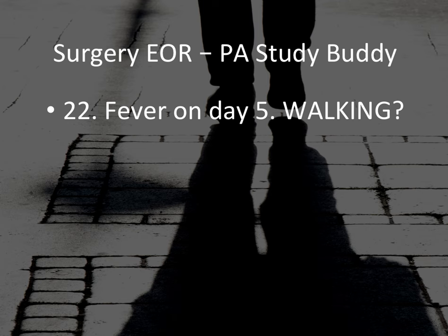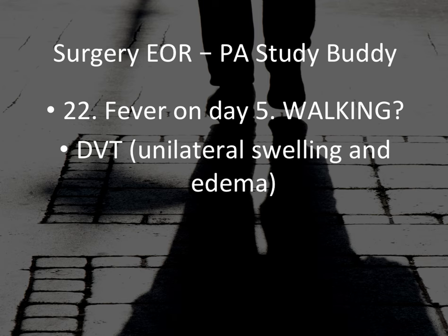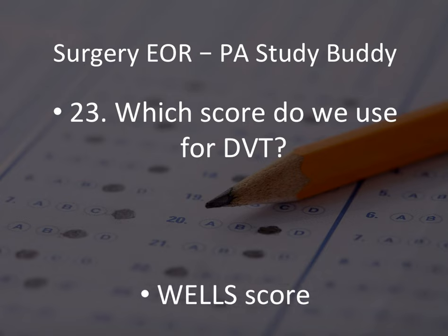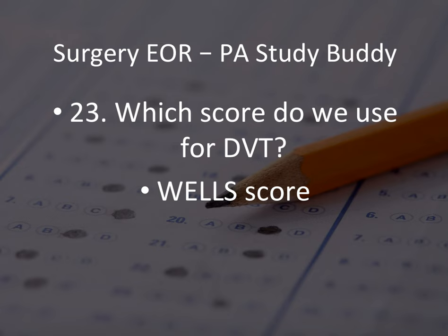Fever on post-op day five — walking — this will be DVT. Remember: days one to three is wind/pneumonia; on day five it will be DVT, and the patient will have unilateral swelling and edema. Which score do we use for DVT? They may ask which score is most indicative of this diagnosis, and the answer is Wells score. Wells score, DVT, fever, day five. If Wells score is greater than four, you should order a duplex ultrasound.